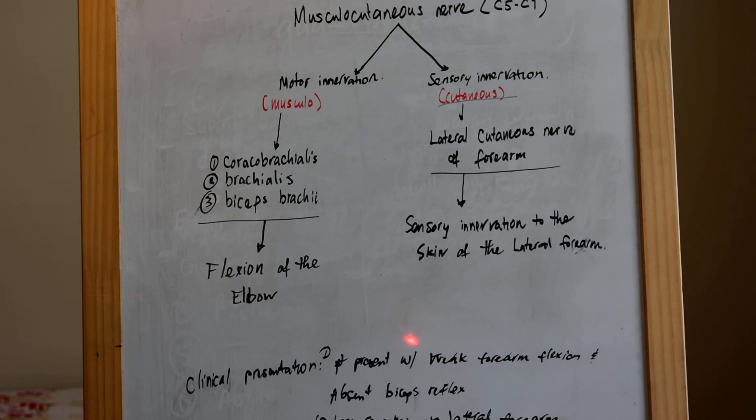The lateral cutaneous nerve provides sensory innovations to the skin of the lateral forearm, and that's part of the musculocutaneous nerve. Or they can ask about, okay, there's damage to the motor components of the musculocutaneous nerve, what happens?